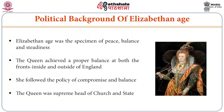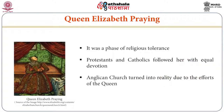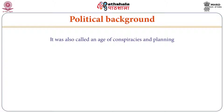The queen achieved proper balance on both fronts, inside and outside England. She followed the policy of compromise, balance, and stability. The queen was supreme head of both the church and the state, giving her control over all administrative works. It was a phase of religious tolerance — Protestants and Catholics followed her with equal devotion. The Anglican Church turned into reality due to her efforts.